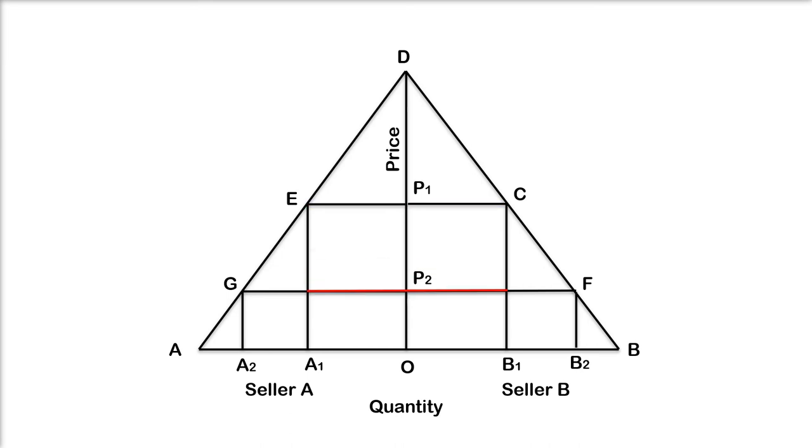Price in Edgeworth's solution oscillates between OP1 and P2, never stopping for even a moment. Thus, this duopoly situation is unstable equilibrium where the price continuously varies between the competitive level and the monopolistic levels.